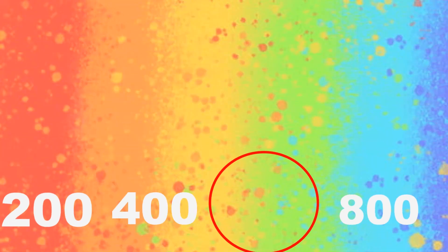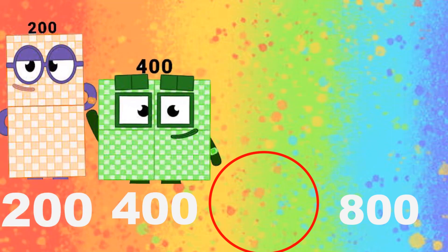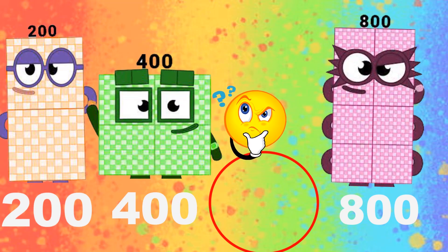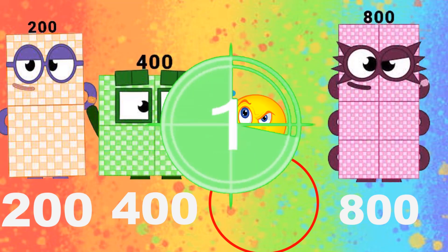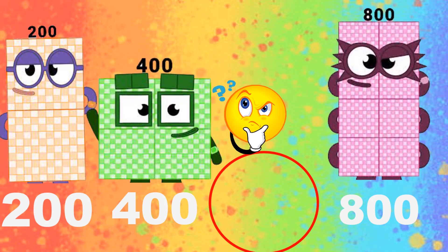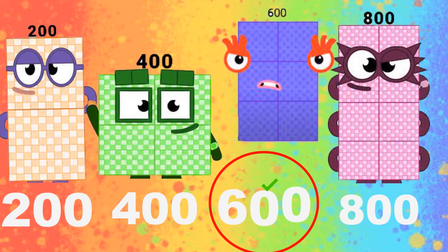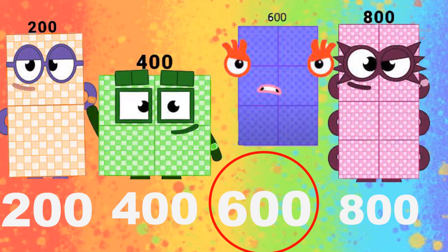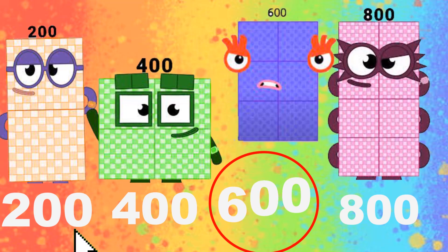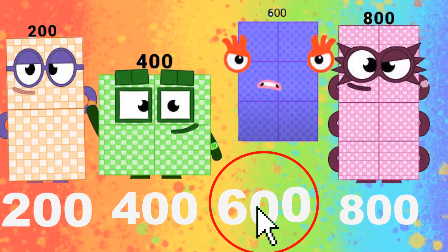One number is missing: 100, 400, _, 800. 3, 2, 1 — the answer is 600. Let's count the number sequence: 100, 400, 600, 800.